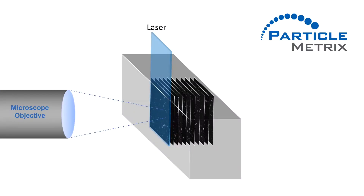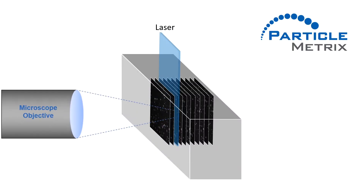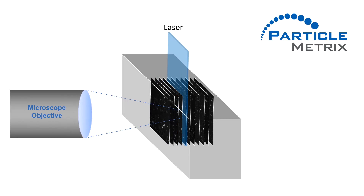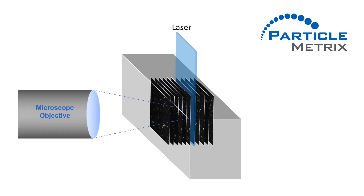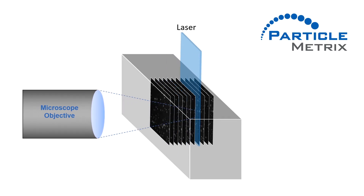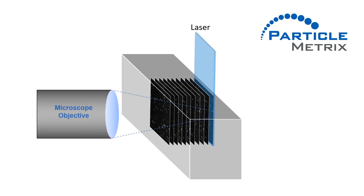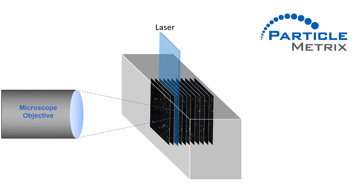The ZetaVue automatically analyzes 11 discrete positions within the measurement cell to obtain a valid and statistically robust result with more than 2000 analyzed particles in less than one minute.